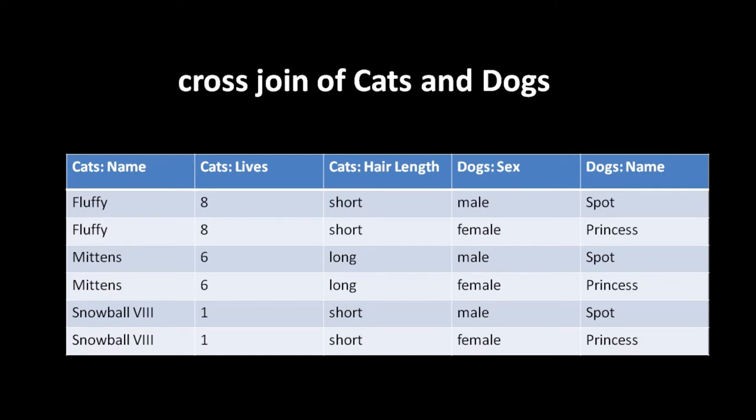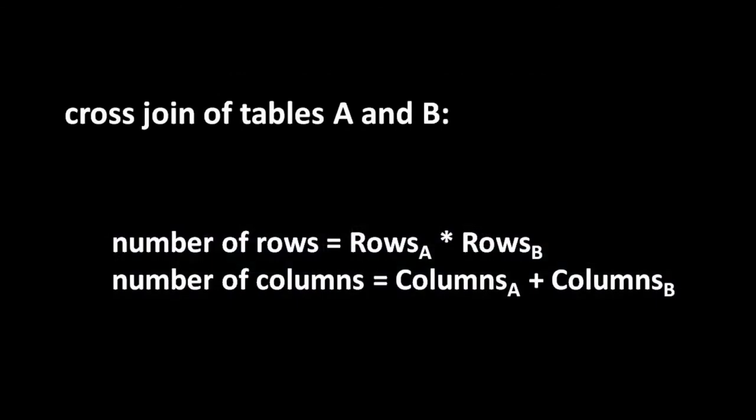This cross-join table has all the attributes and all the columns of the original two tables. Note that each column is labeled with the table from which it originates, which is important because we have both a cats name column and a dogs name column - two distinct columns. When you cross-join tables A and B, the number of rows is the product of the rows in A and B, and the number of columns is the sum of columns in A and B.